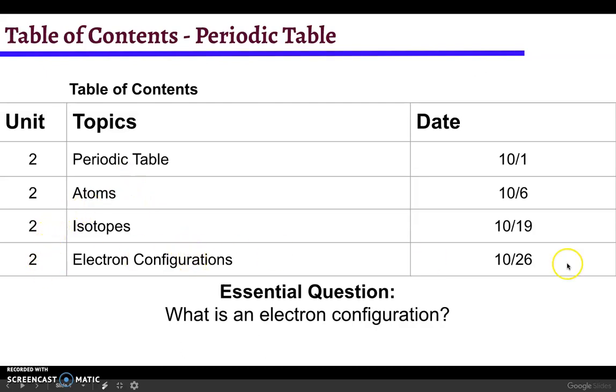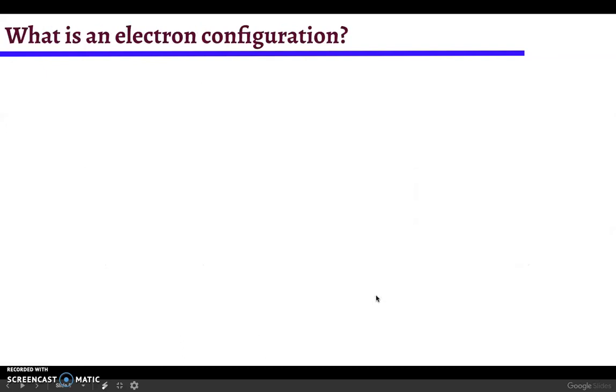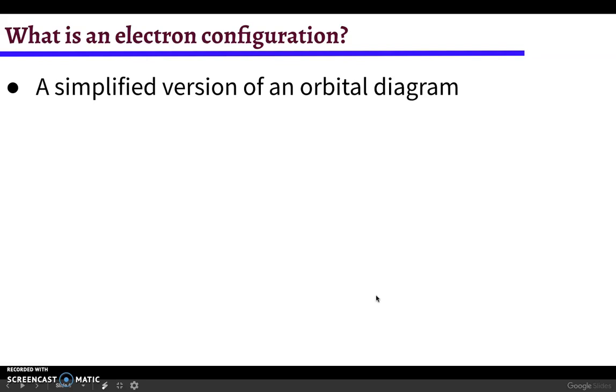Central question: What is an electron configuration? It's basically just a simplified version of an orbital diagram. So if you haven't watched or completed the orbital diagram lesson yet, you should probably do that first.